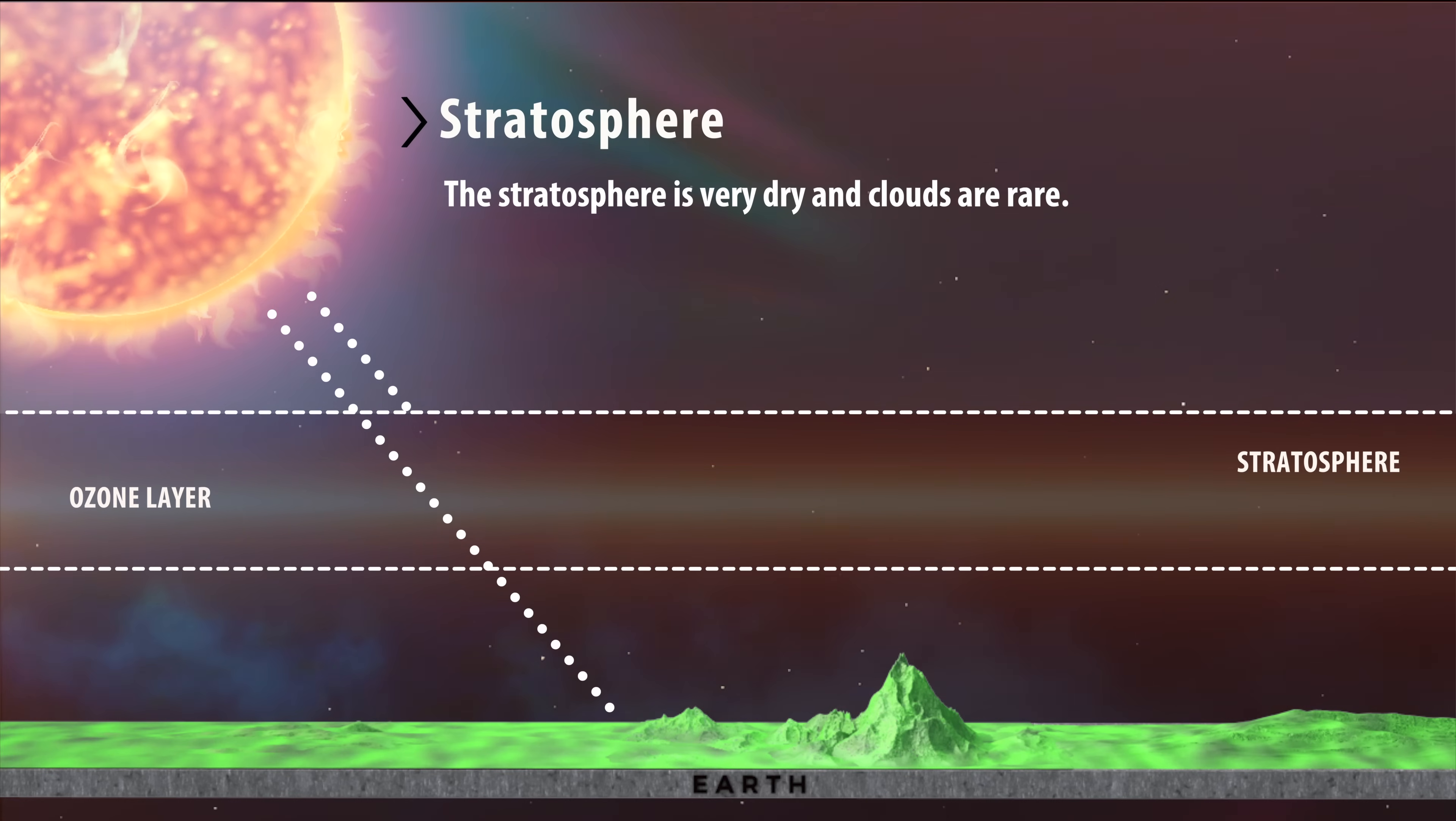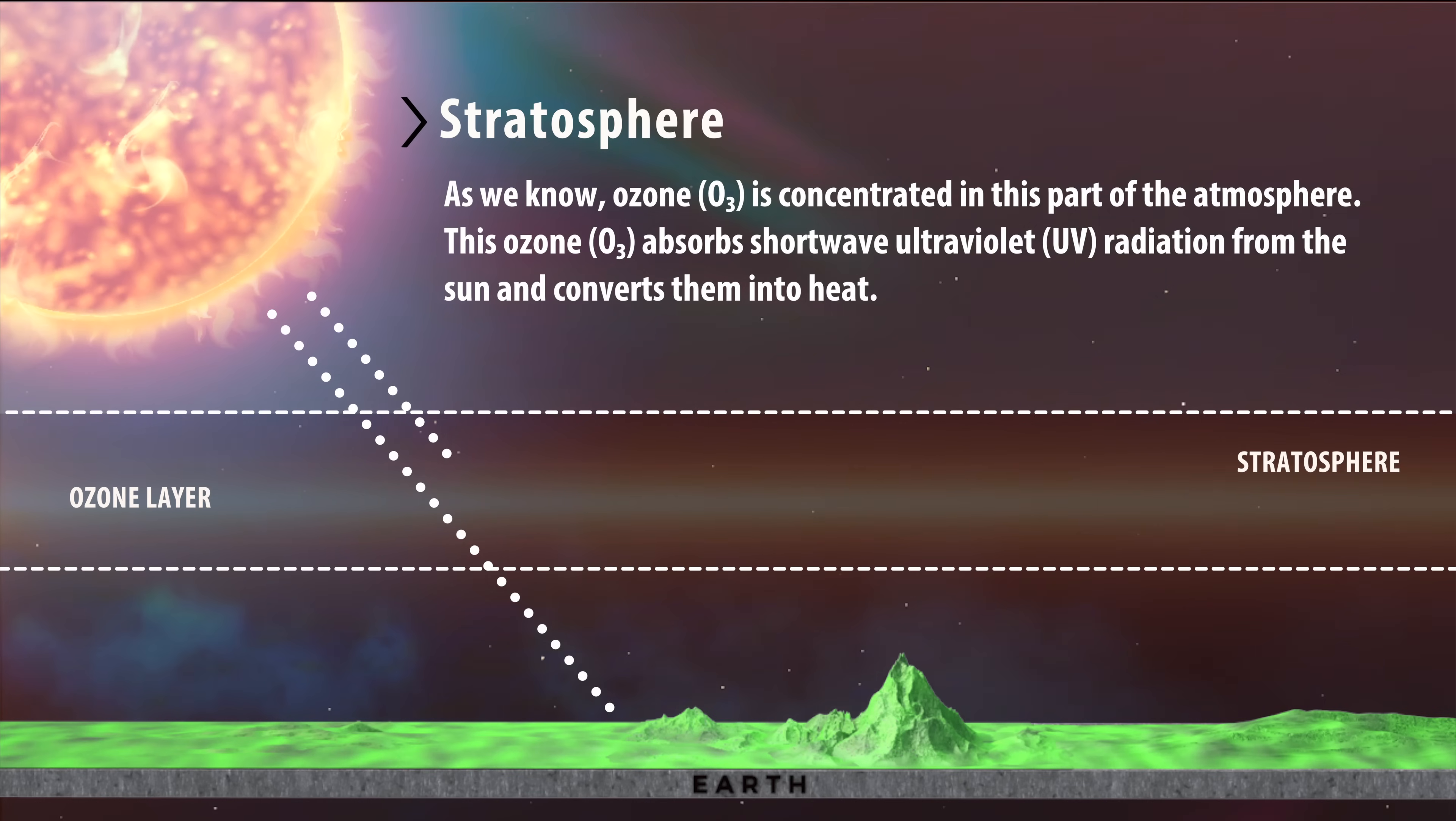The stratosphere is very dry and clouds are rare. As we know, ozone is concentrated in this part of the atmosphere. This ozone absorbs shortwave ultraviolet radiation from the Sun and converts them into heat.